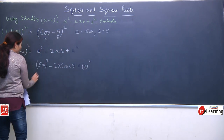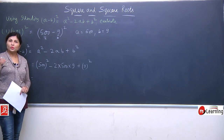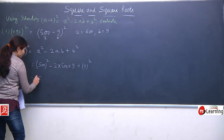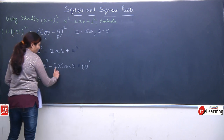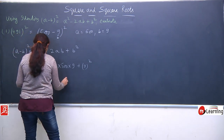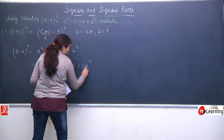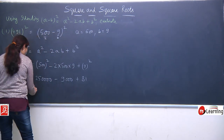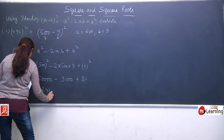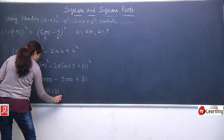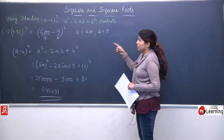Now 500 square — here aapko keval 5 ka square nikalna hai. 5 square is 25, and there are 2 zeros which get doubled to give 4 zeros, so 500² = 250000. When we multiply 2×500×9, we get 9000. Plus 9 square which is always 81. Applying the minus signs and solving, we get the result 241081. So by using the identity, we find the square of 491.